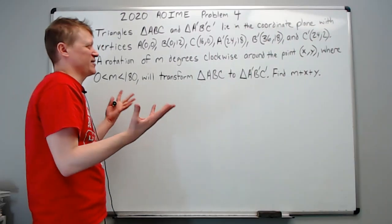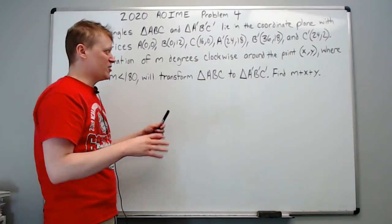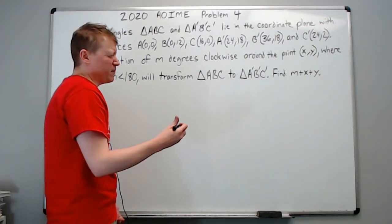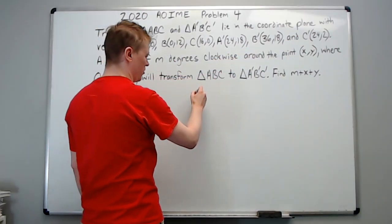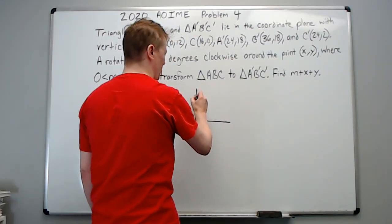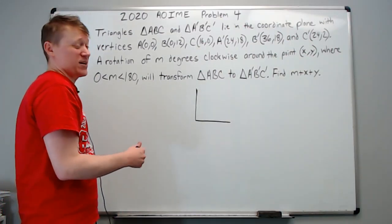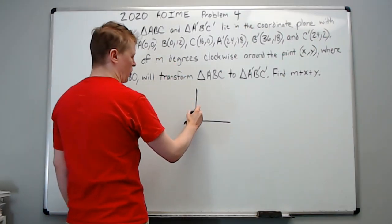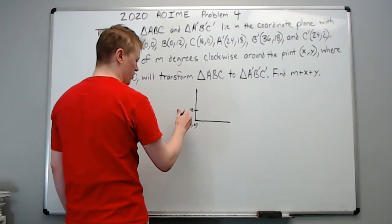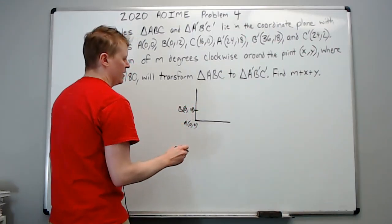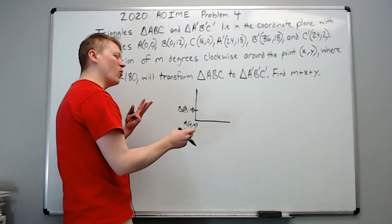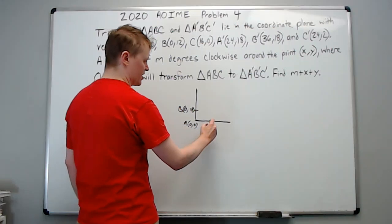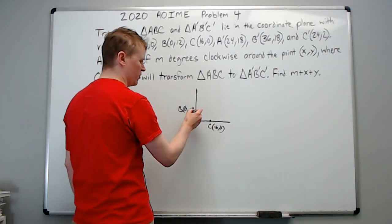It's a little overwhelming with the six points. If you can't think of anything off the top of your head, drawing a picture will help. All of these are in the first quadrant, so let's draw a first quadrant. The point of making a picture is to give yourself some intuitive idea of how to proceed. We start with A at (0, 0), B at (0, 12), and C at (16, 0). Try to be somewhat accurate — it doesn't have to be perfect. Let's go ahead and make a triangle.